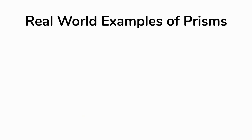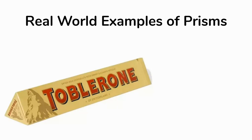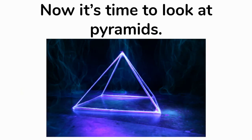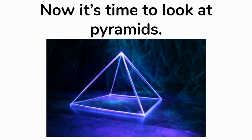Let's look at some real world examples of prisms. There's a candy bar called a Toblerone, and the box it comes in is a triangular prism. And just a cereal box — really, any box — is a rectangular prism. The ends are rectangles and the sides are rectangles. Pretty much any box you've seen is a rectangular prism. Now it's time to look at the other type of polyhedron, which is pyramids.